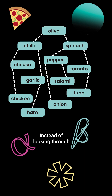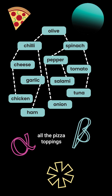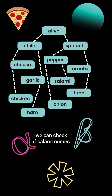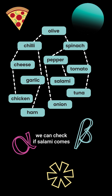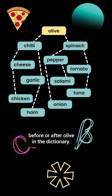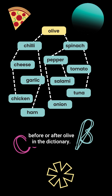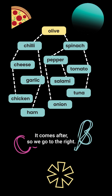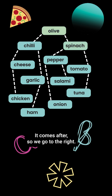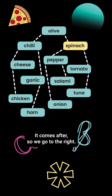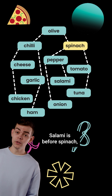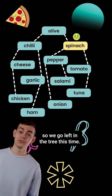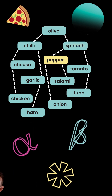Instead of looking through all the pizza toppings one by one, we can check if salami comes before or after olive in the dictionary. It comes after, so we go to the right. Salami is before spinach, so we go left in the tree this time.